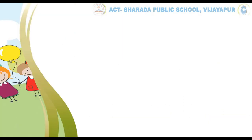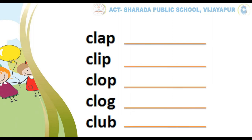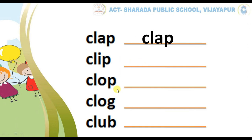That is, read and practice the words. In this activity, kids, you have to read the given words and practice them. For example, kids, repeat after me — clap, clap. Then write the word 'clap' here. In the same way, you have to complete the remaining ones.